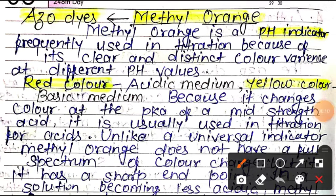Methyl Orange is an important class of dyes. In the previous video, we discussed the dyes definition and classification. You must watch the previous video completely. Methyl Orange is an Azure Dye. In that video, we classified the dyes on the basis of the chromophore.